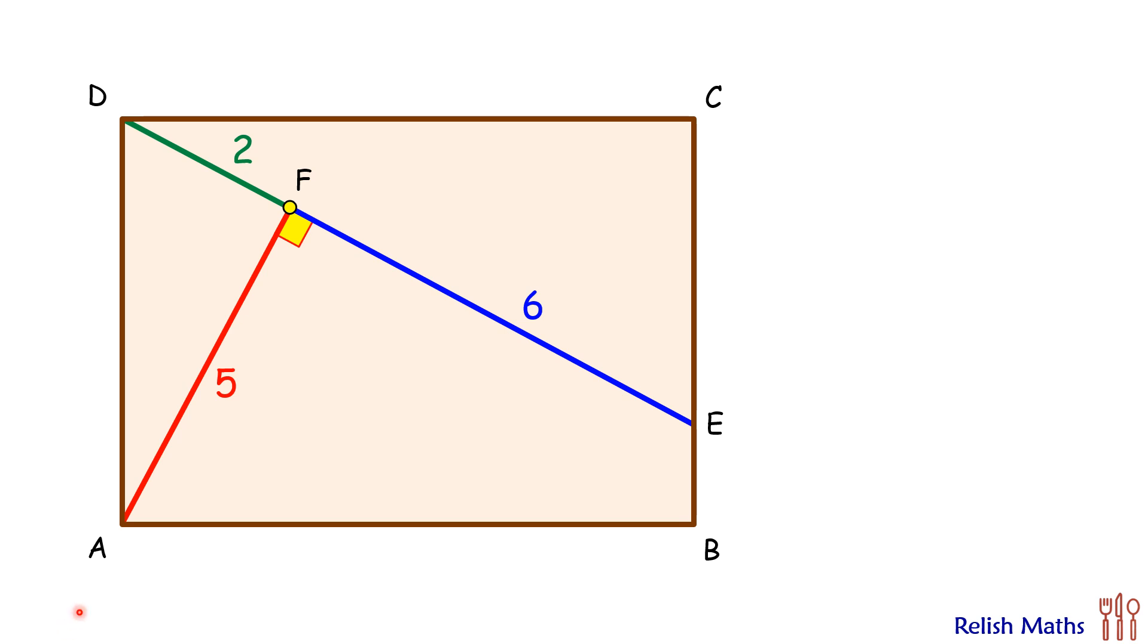Let's check the solution. Let's join A and E. Now this triangle AED has the same base as that of the rectangle, and thus the area of rectangle will be twice the area of triangle AED.